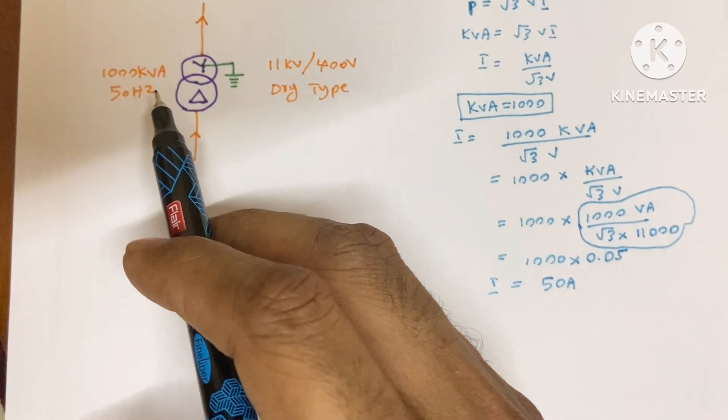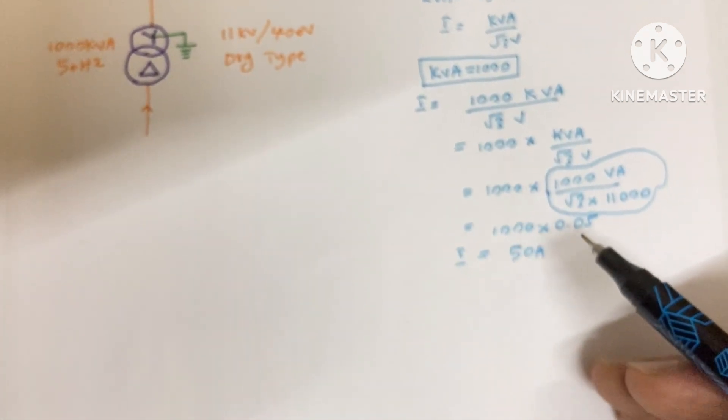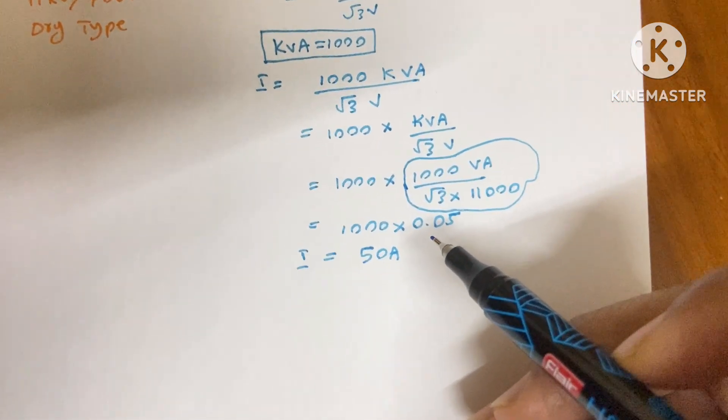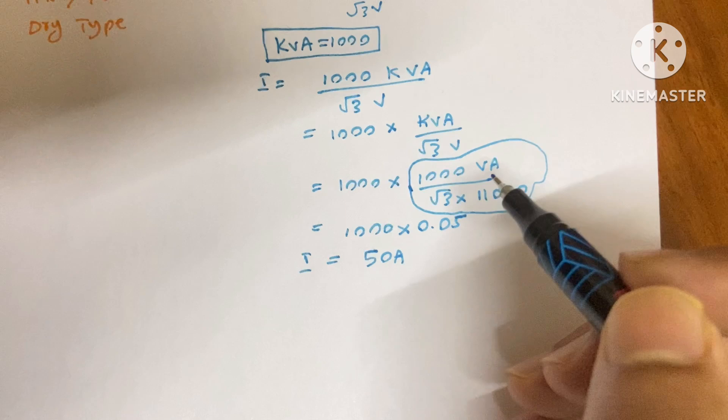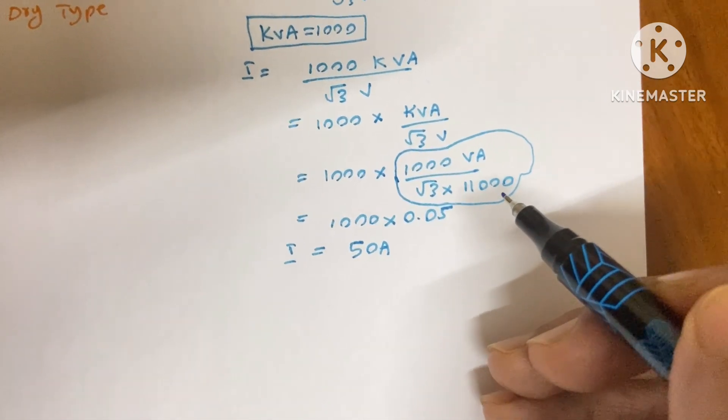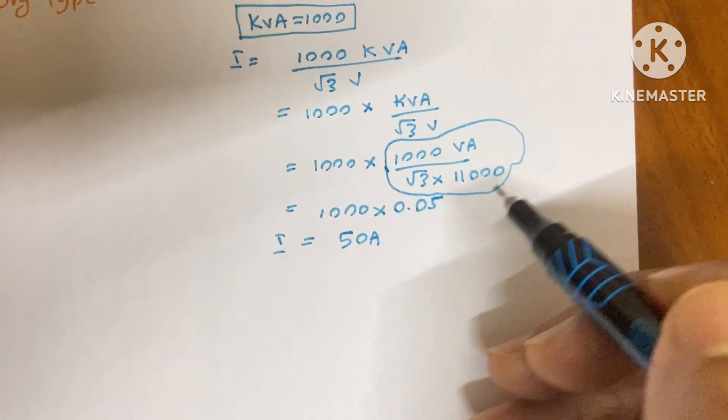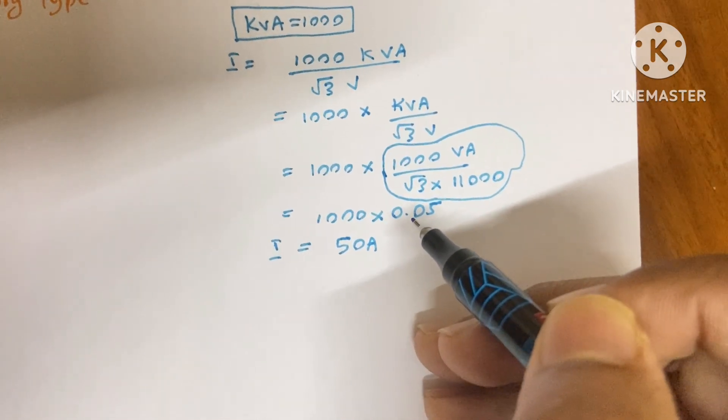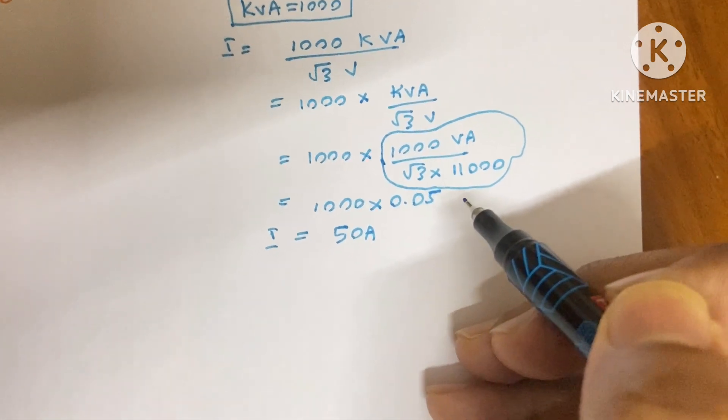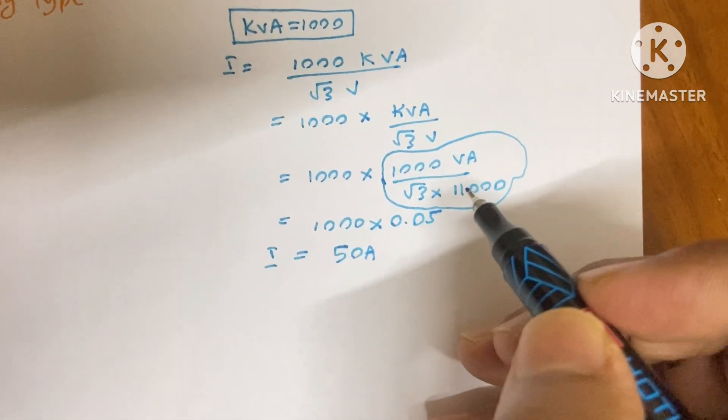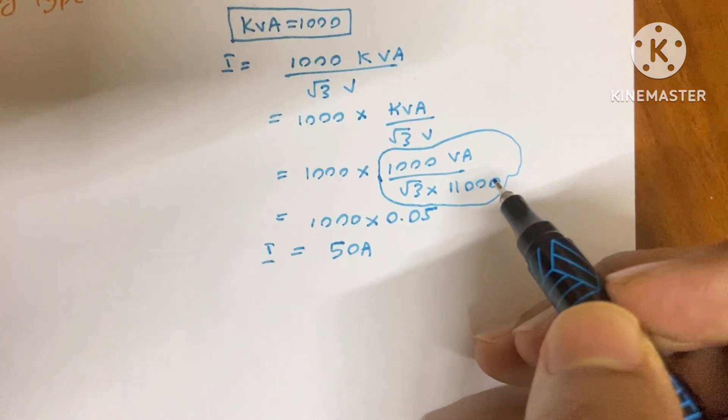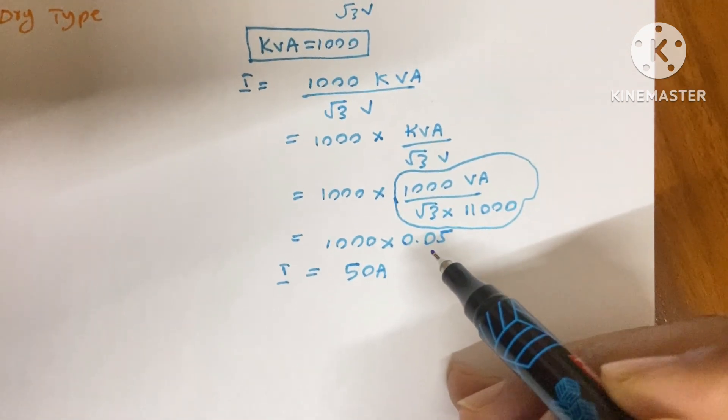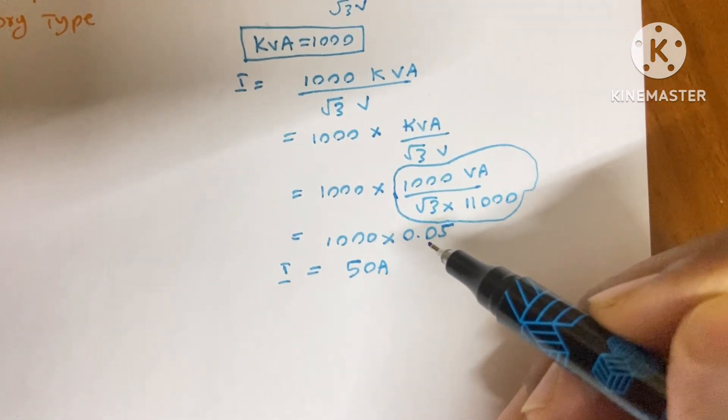You only require to multiply the kVA rating of the transformer with 0.05. Suppose you are going to find the primary side of a transformer having the primary voltage is 33 kV or 66 kV, then the value will be changed. That means the value of this 0.05 will be changed. So first you need to understand what is the voltage of the primary of your transformer.